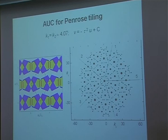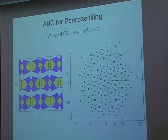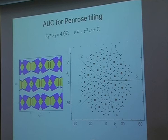This is an average unit cell, now calculated in two dimensions — it looks like that for this particular K vector. Of course, if you change the K vector you will get another average unit cell. If you calculate the Fourier transform of this distribution over every unit cell, you will get the diffraction pattern, which is exactly the diffraction pattern for Penrose tiling.